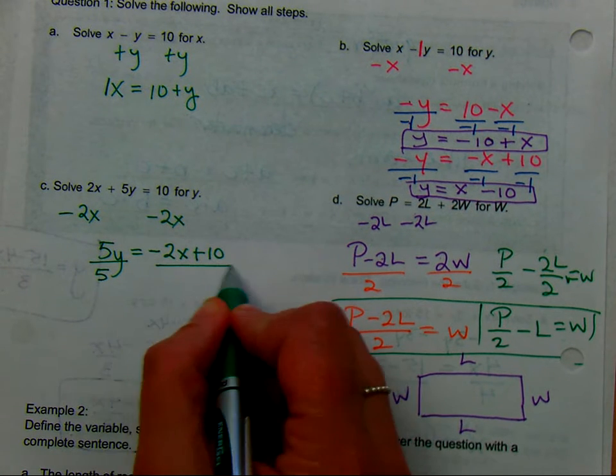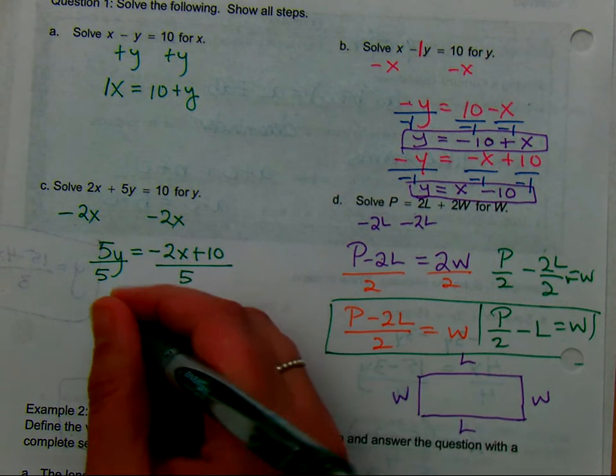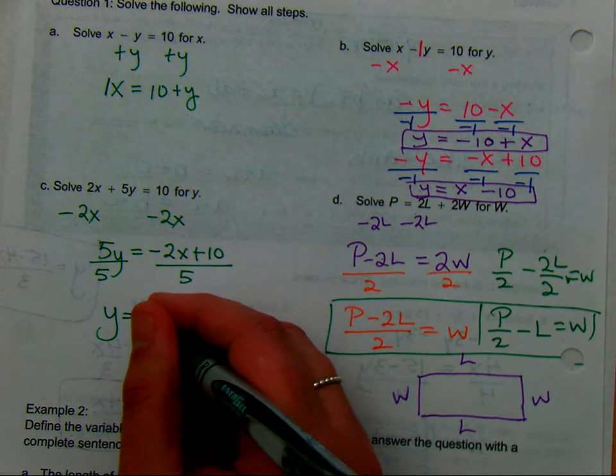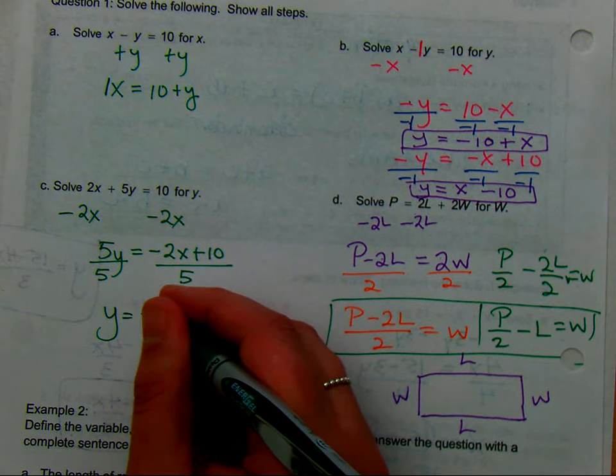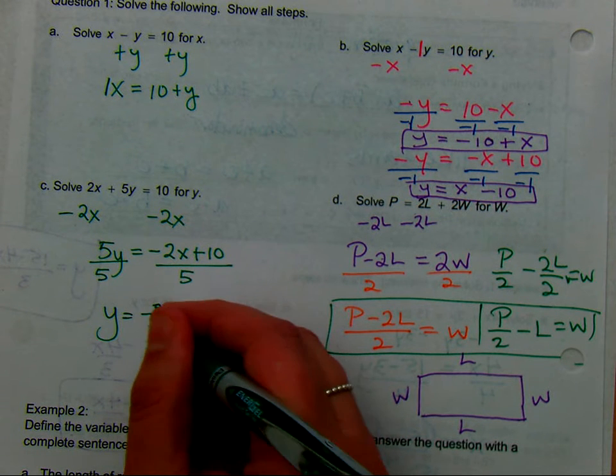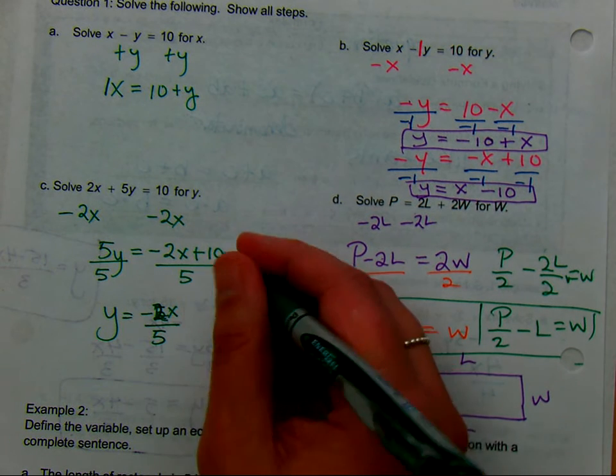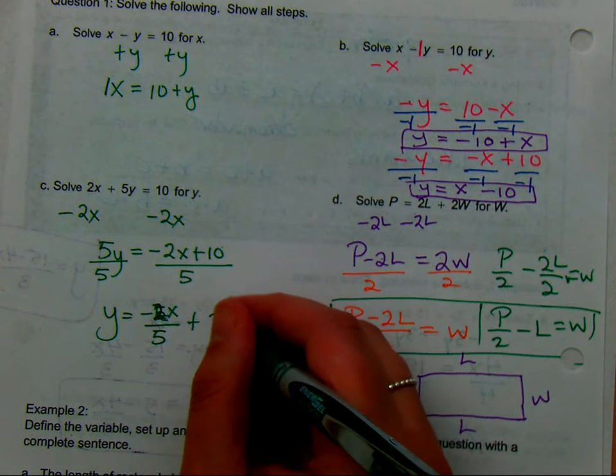Okay, and so some of you wrote it like this. Another way you might write it is negative 2X over 5, and then plus what? 2.